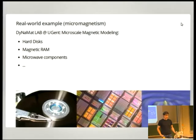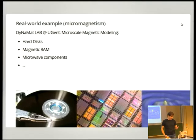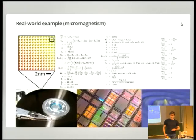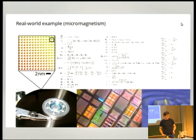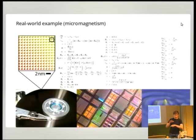Since this is the scientific HPC session, I'm allowed to show at least a little bit of science. This is the partial differential equation that we have to solve for many millions of discretization cells and many millions of time steps. It involves all the different sides holding each other, so it's pretty computationally intensive.